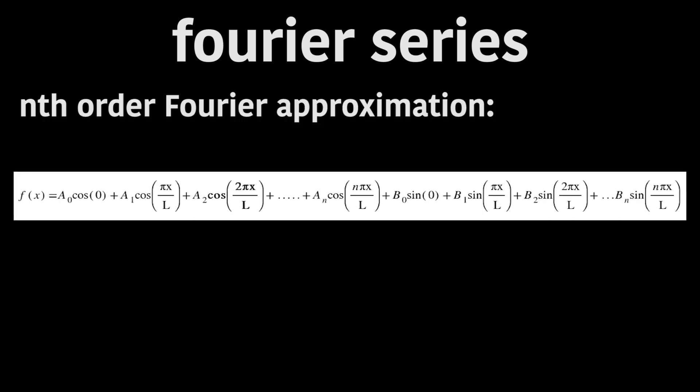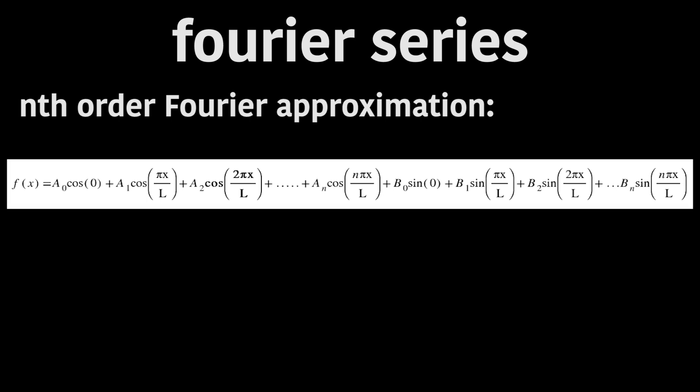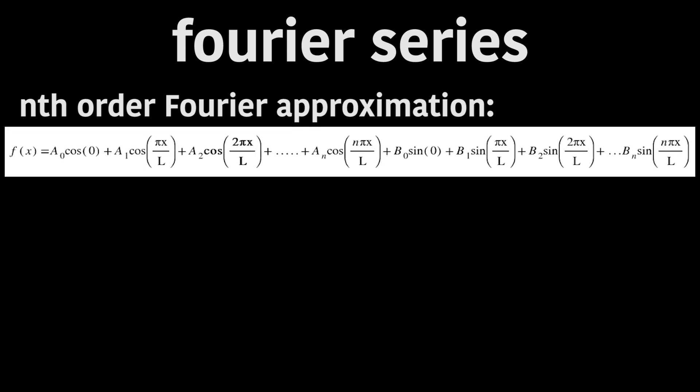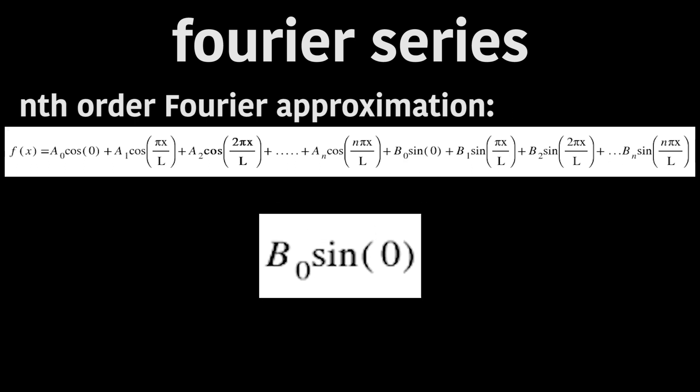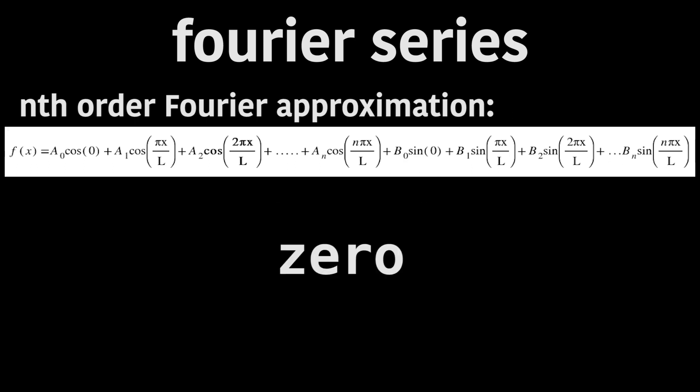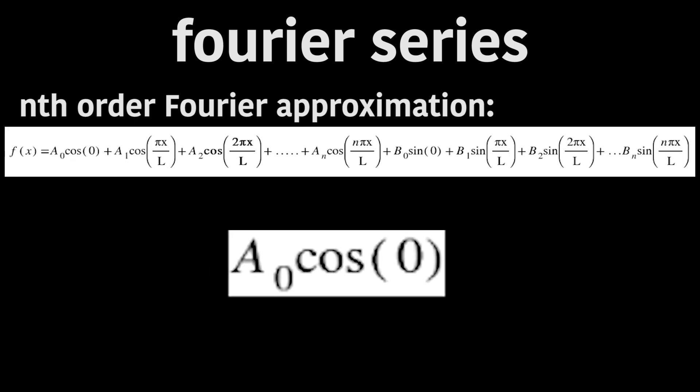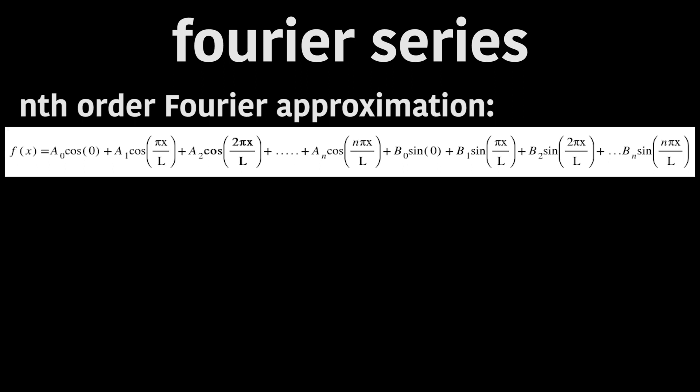This is called the nth order Fourier approximation, where n is the number of terms of each trig function. Note that larger numbers of n will get you better approximations of f of x. We should note that b sub 0 times sine of 0 becomes 0, so we can neglect that term, and also that a sub 0 times cos 0 just becomes a constant. So that long list of trig terms serves to approximate f of x on the interval negative L to L.